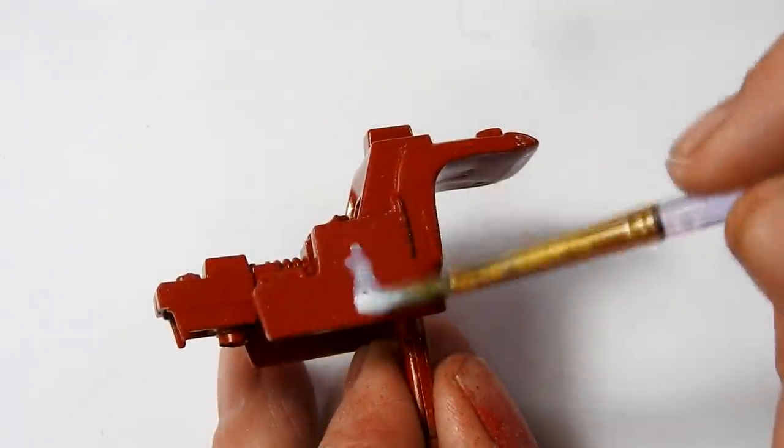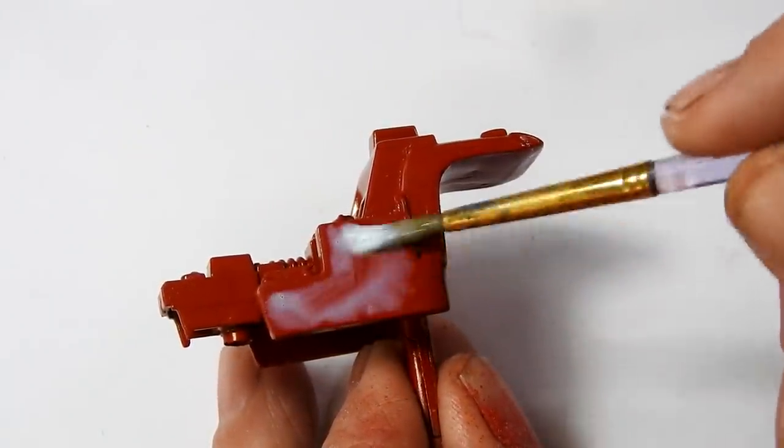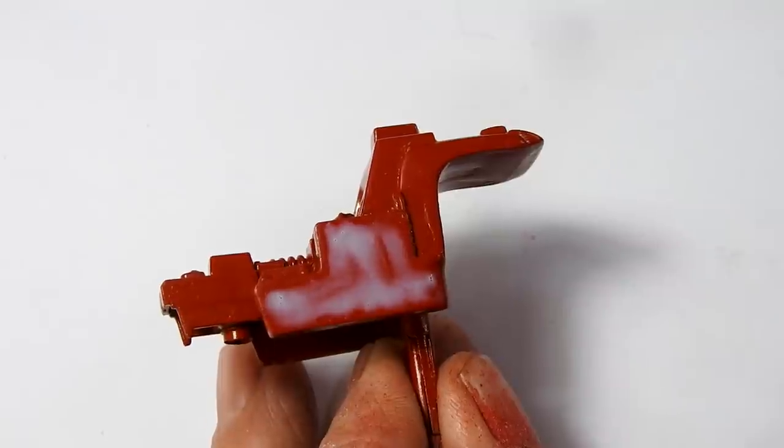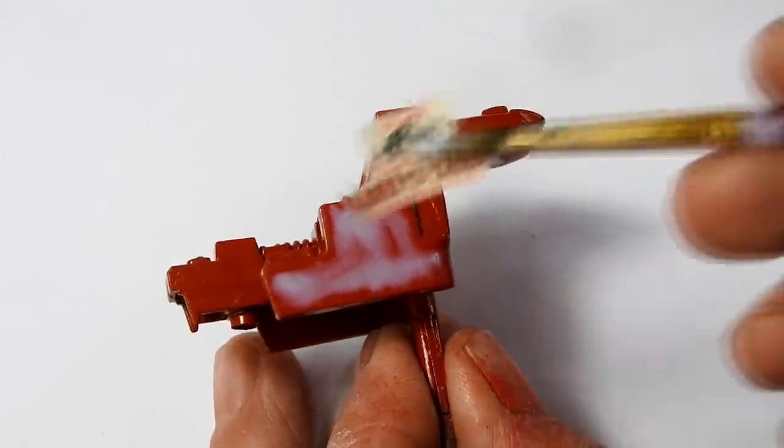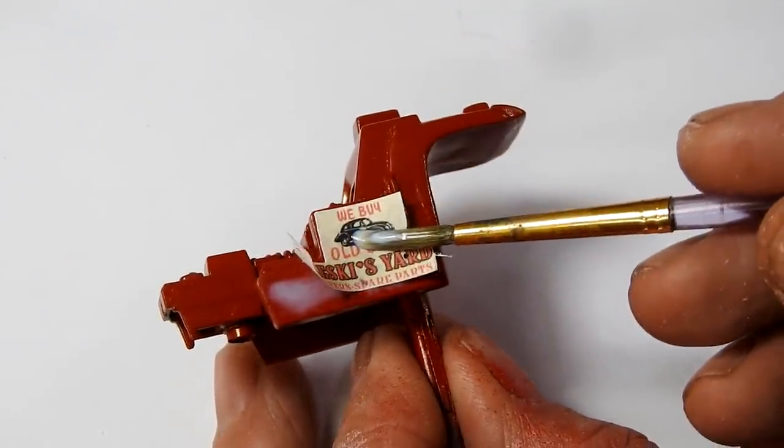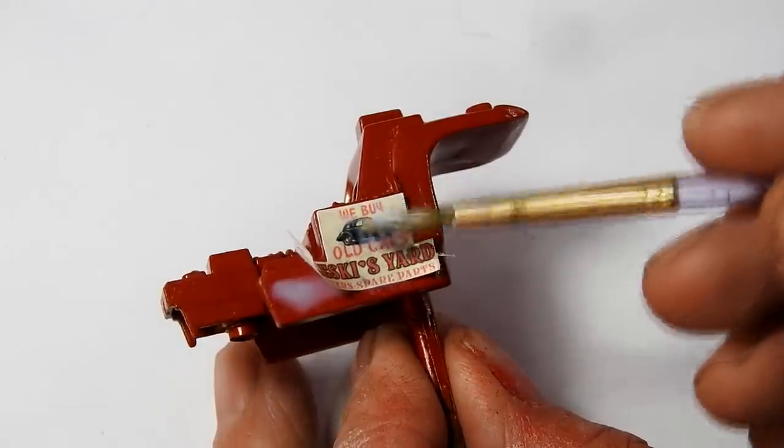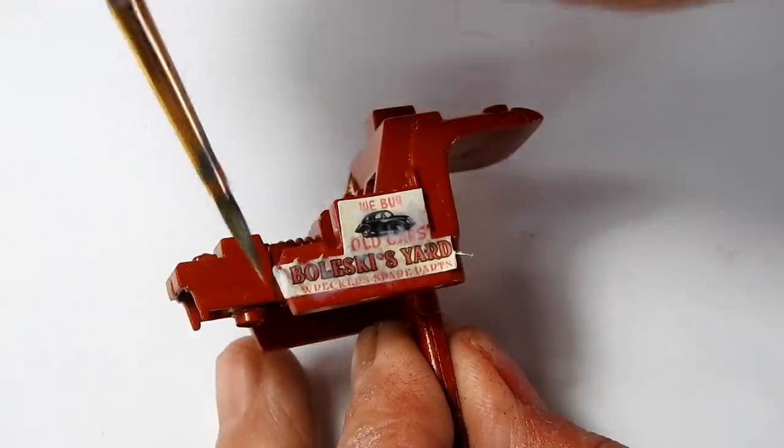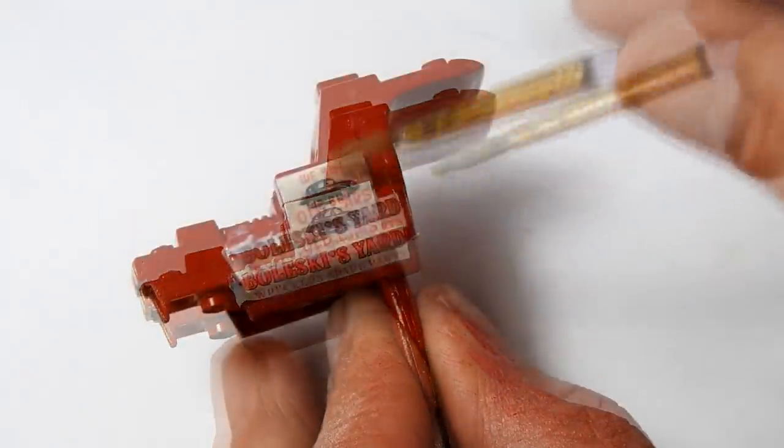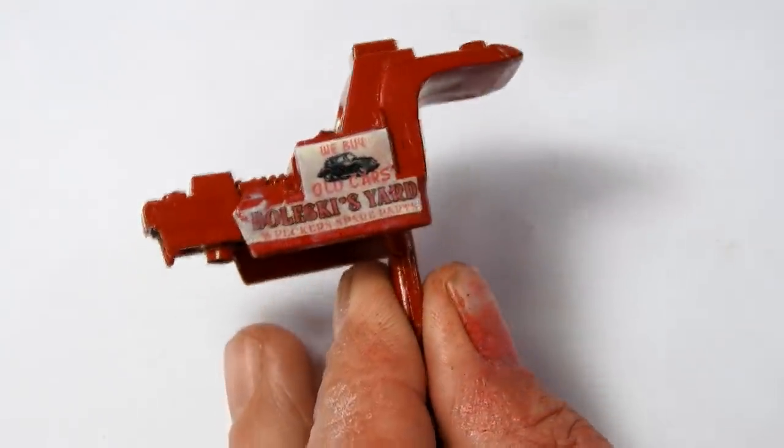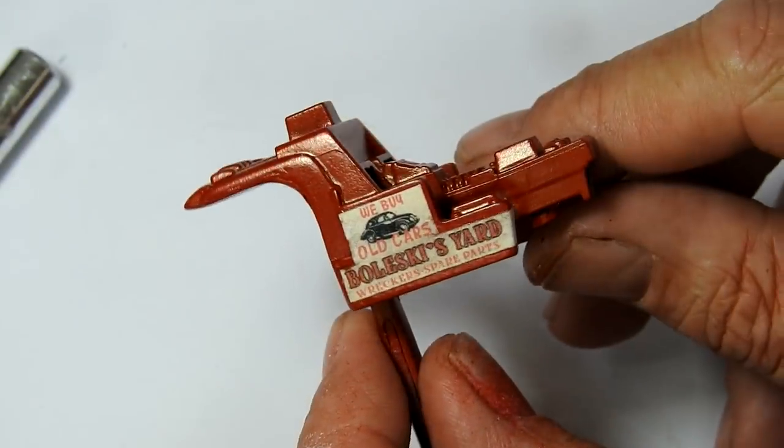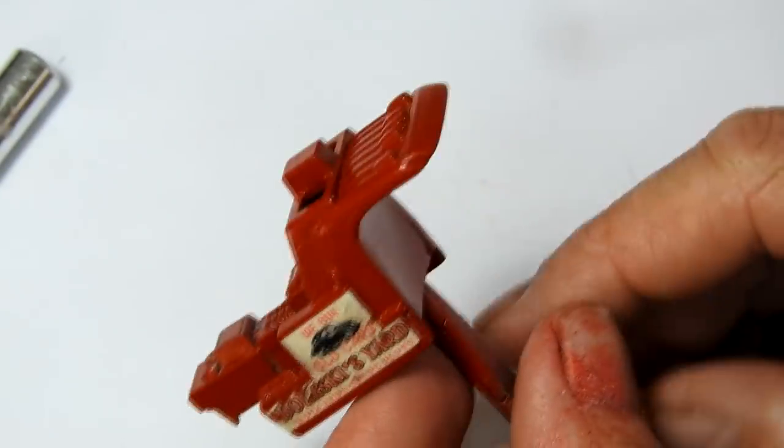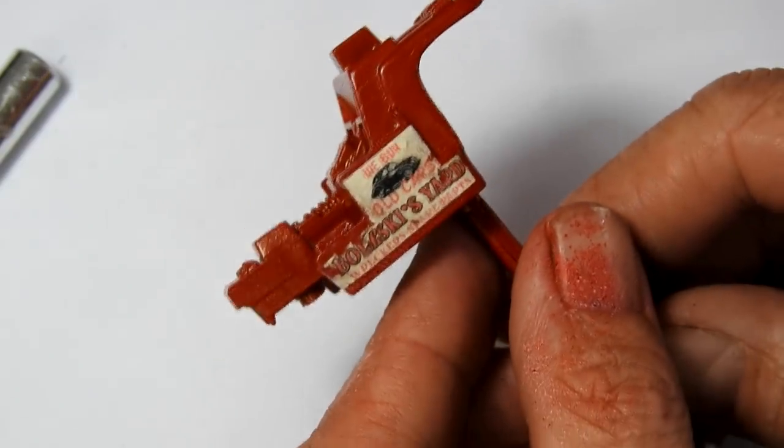And then I'll use some watered down PVA glue to apply them onto my truck sides. Here they are once they've dried. Use enough glue to make them watertight.